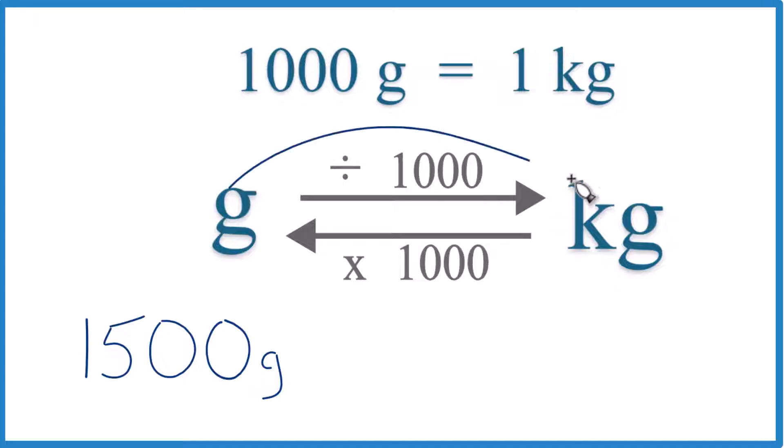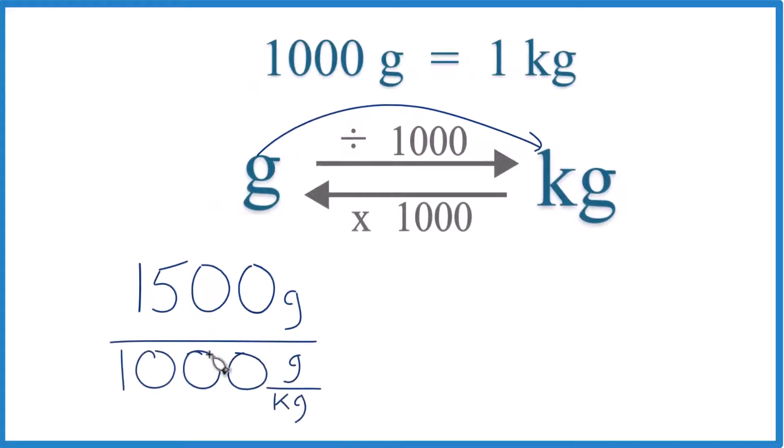So grams to kilograms, we divide by a thousand like this, and that's a thousand grams per kilogram. So we have grams up here, but now grams cancel out. We're going to be left with kilograms, so we know we did it correctly.